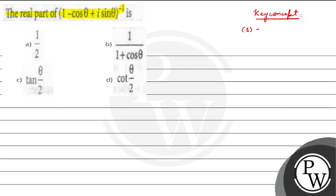Suppose z belongs to any complex number, then z inverse is nothing but 1 by z. Okay, this is the first property. The second property is nothing but rationalization of a complex number.